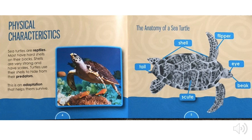Physical Characteristics. Sea turtles are reptiles. Most have hard shells on their backs. Shells are very strong and have scales. Turtles use their shells to hide from their predators. This is an adaptation that helps them survive.